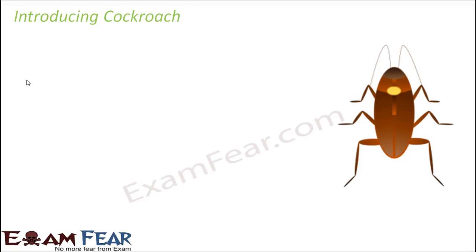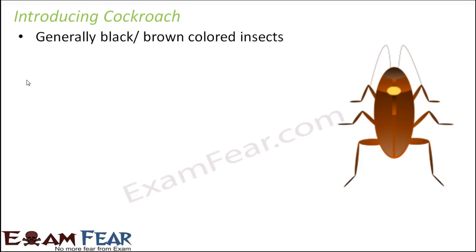Cockroach is generally a black or brown colored insect. However, it is not always necessary that they are black or brown — sometimes you also see different breeds, some yellow or red colored cockroaches as well, but mostly the ones found in our households or vicinity are generally black or brown in color.